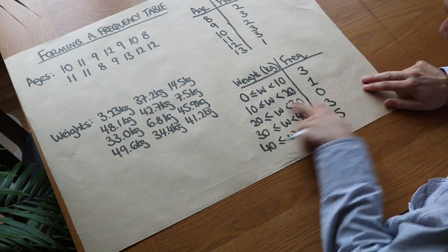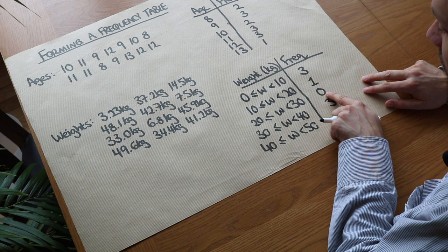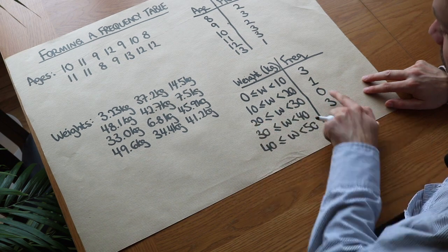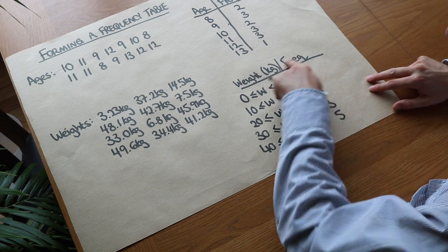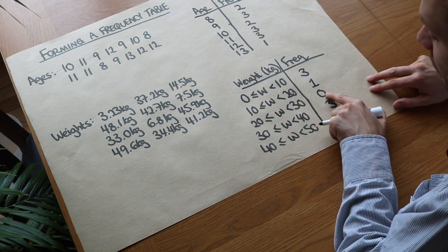And you might wonder by the way do we need to include this row? There's no people with a weight between twenty and thirty kilograms. Why list it at all? And the reason is because it's nice to see in this table that we actually have this gap.